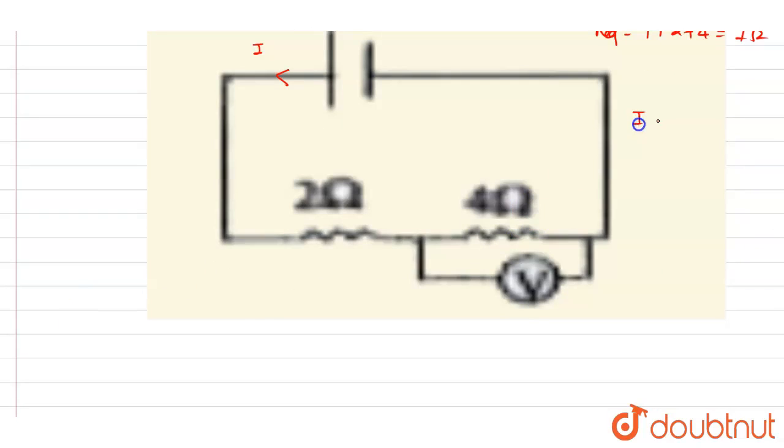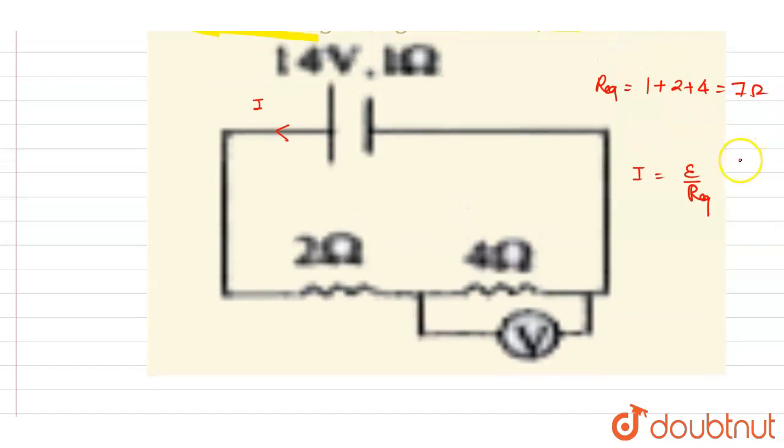What will be the current here? Current will be equal to E by R equivalent. R equivalent you can just see is seven, and E is 14, so it will be